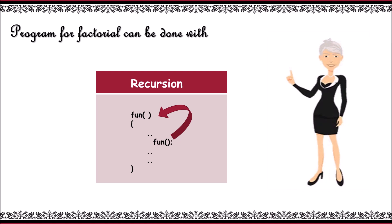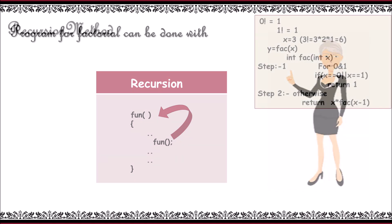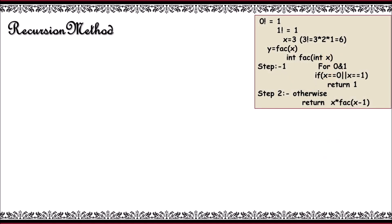I will explain this concept with an example, the recursion method for finding the factorial. It is a two-step process. In step 1, if we need to find the factorial of a given value that is either 0 or 1, it returns 1.